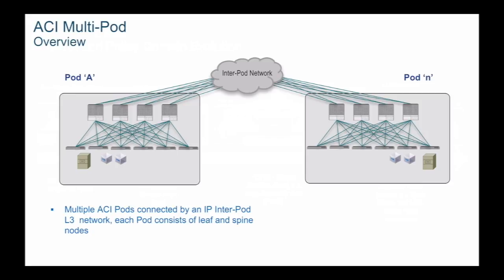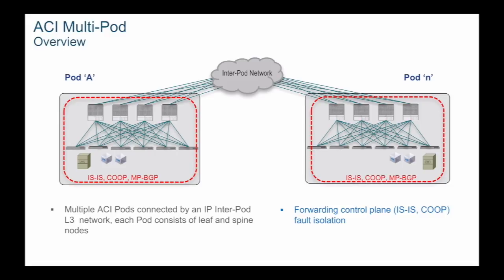ACI multipod consists of multiple pods. Each pod is a separate leaf-spine topology where spine switches connect to an IP interpod network. The interpod network is a layer 3 network that provides connectivity between pods and is used to transport control plane and data plane traffic between the pods. The multipod fabric provides fault isolation for control plane protocols, with a separate instance of ISIS, COOP, and MPBGP running in each pod.